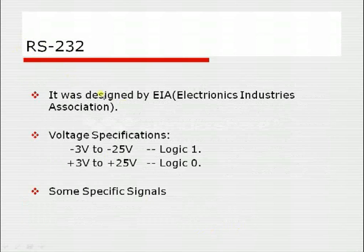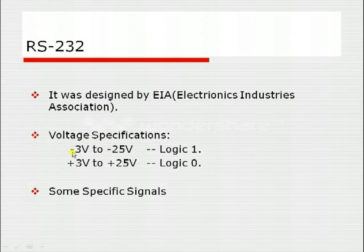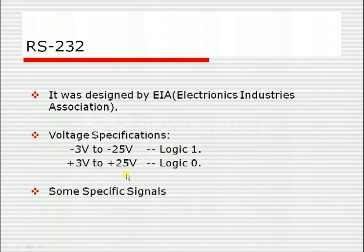RS232 stands for Recommended Standards, designed by EIA (Electronics Industries Association). A protocol is a set of rules. RS232 specifies two types of rules: voltage specifications and signal specifications. For voltage, logic one is represented with -3 to -25 volts and logic zero with +3 to +25 volts. These are called negative logic signals, while TTL signals are called positive logic signals — because logic one uses negative voltage and logic zero uses positive voltage.